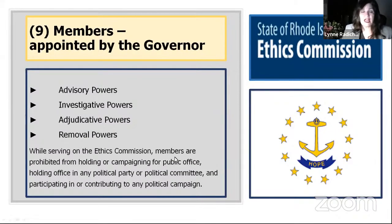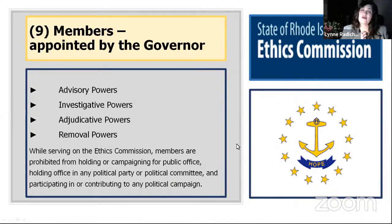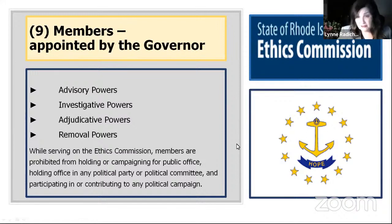A little about the actual Ethics Commission: there are nine members, all appointed by the governor. The governor appoints four directly, and selects the other five from lists of nominees submitted by leaders from both the House and the Senate. Right now there are only eight members. Ross Scheidt, who was chair for a number of years, left after serving 15 years, so we hope to have a ninth member appointed soon.